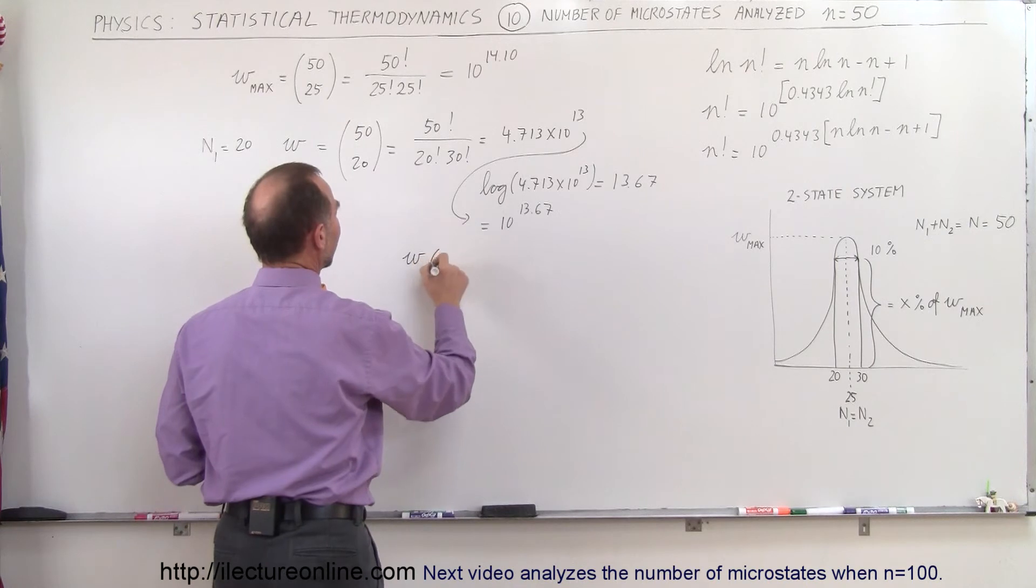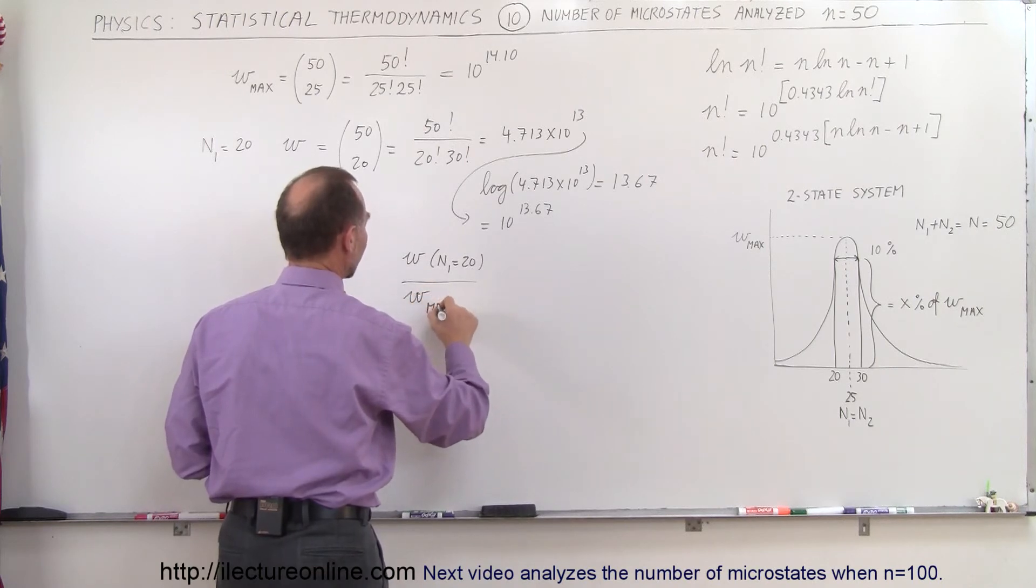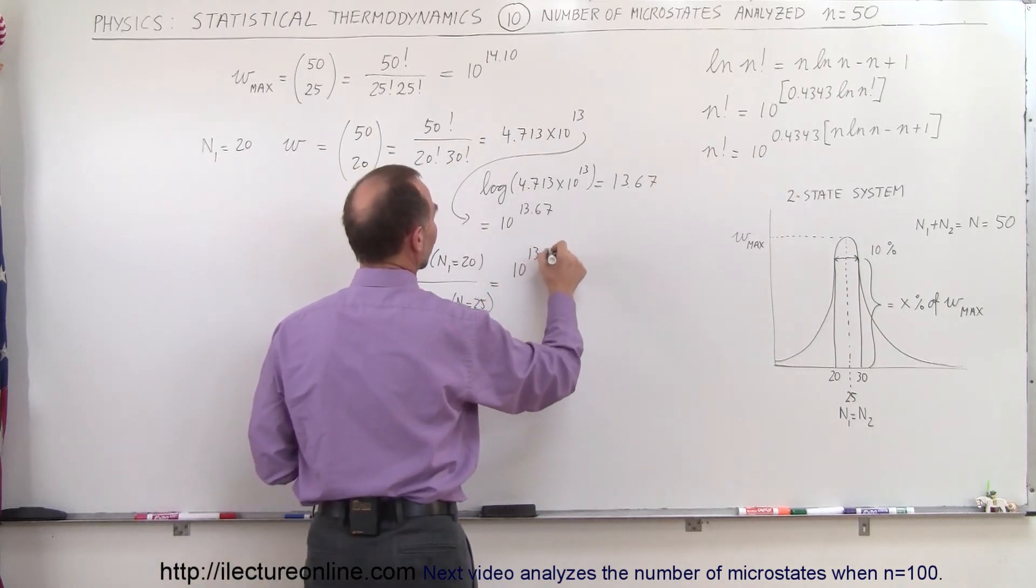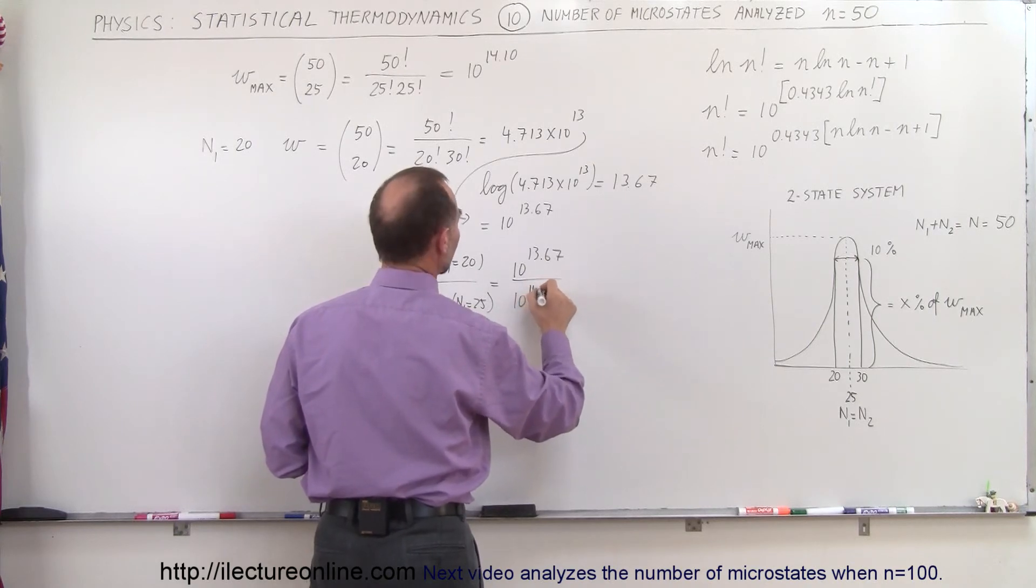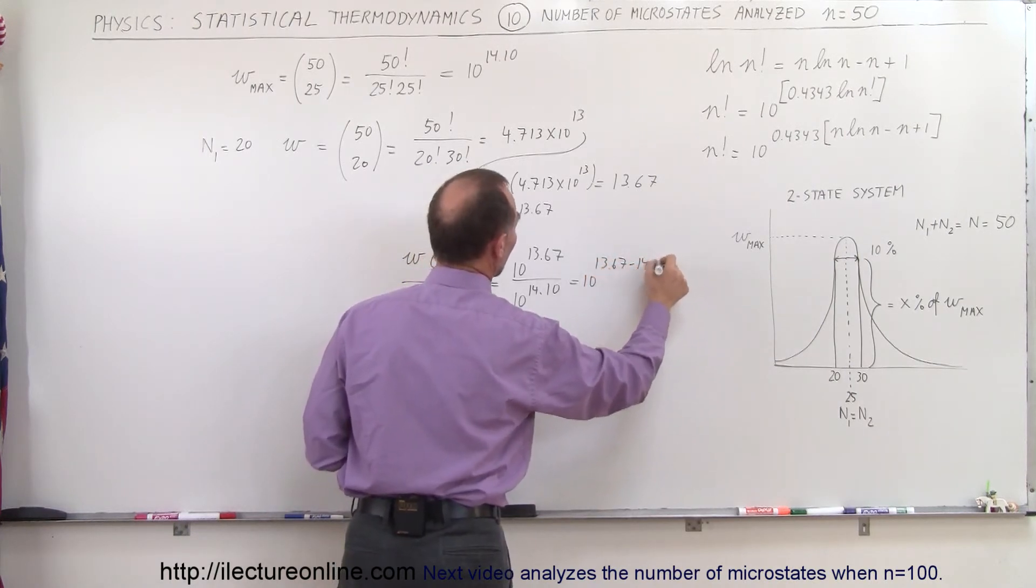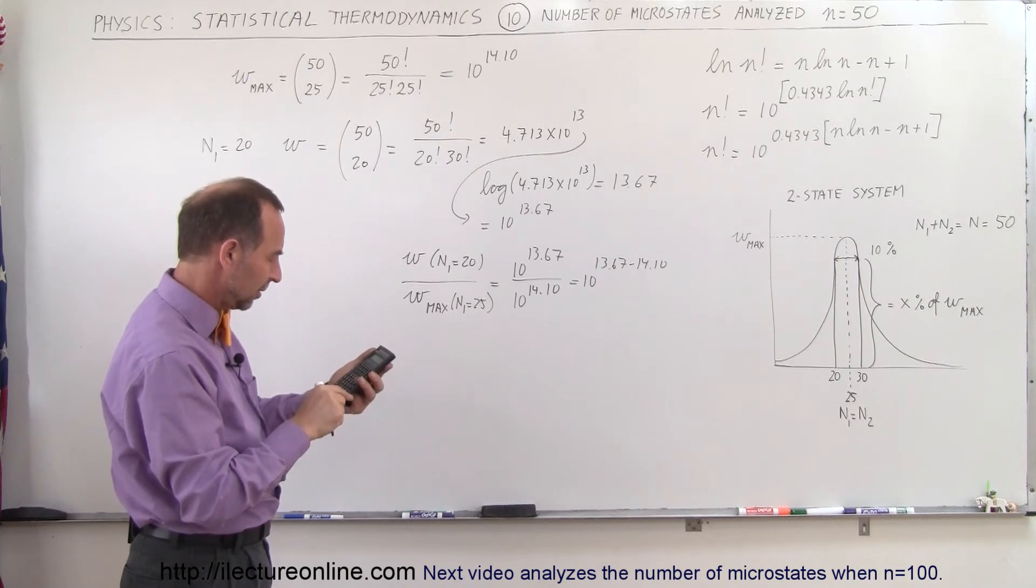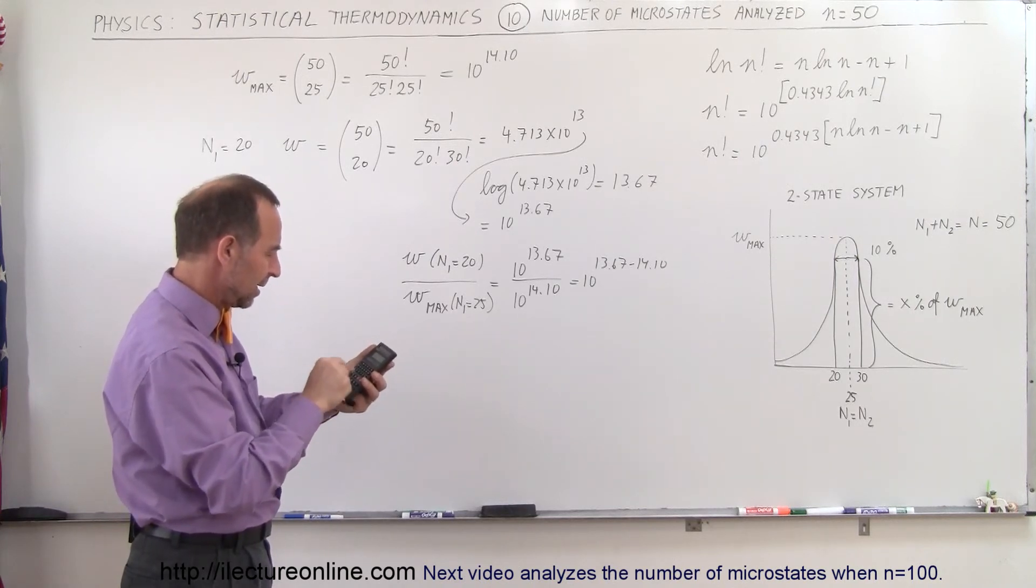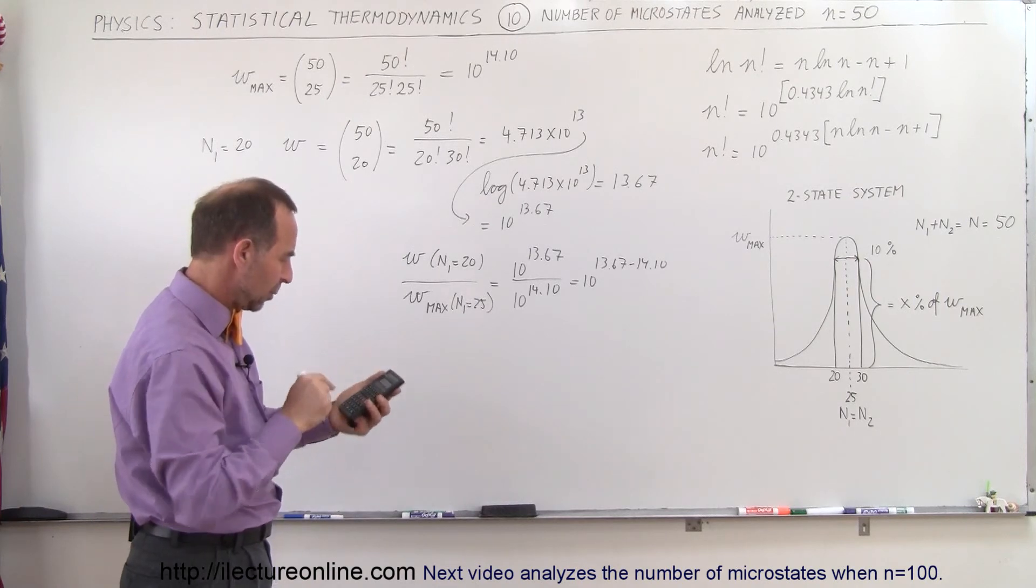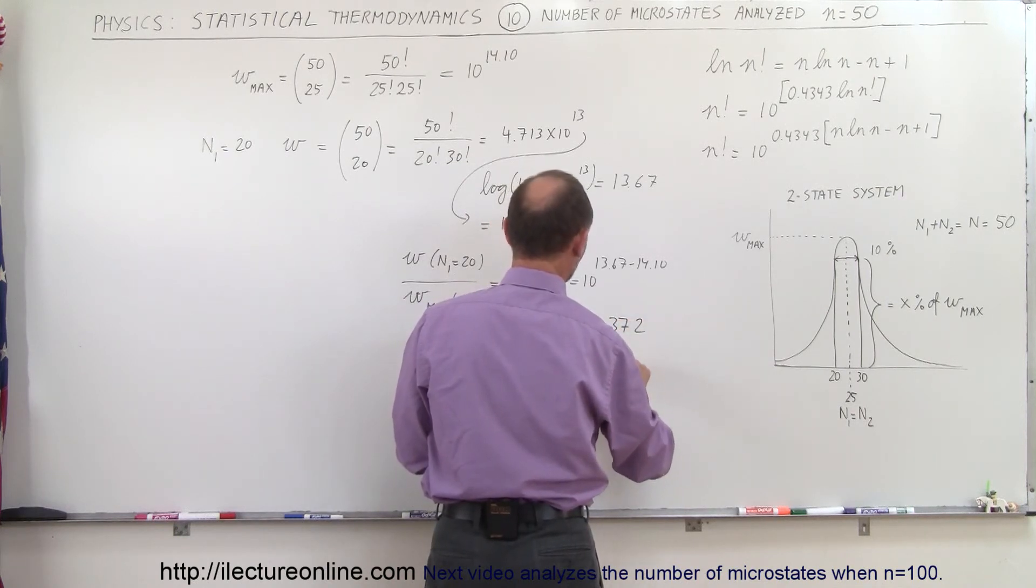So the number of microstates when N1 is equal to 20 or 30 divided by the number of microstates at its maximum value, that means that N1 is equal to 25, is equal to 10 raised to the 13.67 power divided by 10 raised to the 14.10 power. So this would be 10 to the 13.67 minus 14.10. So 13.67 minus 14.1 equals, and that gives me a number equal to 0.372, which is equal to 37.2%.